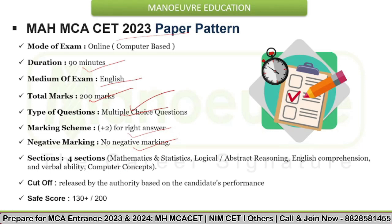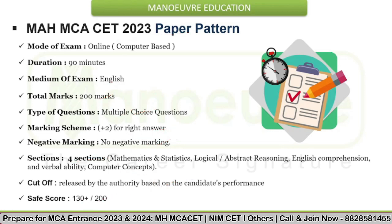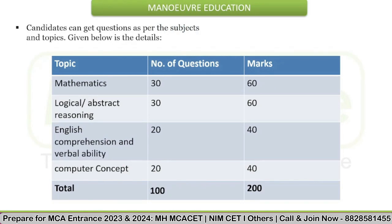There will be four sections: Mathematics and Statistics, Logic, Abstract Reasoning, English Comprehension and Verbal Ability, and Computer Concepts. The cutoff will be released by the authority based on candidates' performance in the exam. Based on the cutoff, candidates will be called for the counseling process. Try to hit 130 plus out of 200 to be on the safer side and secure your seat in the best MCA colleges in Maharashtra.